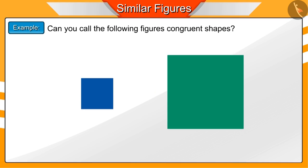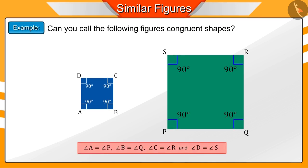If you look carefully, you will find that the side of the smaller square is half the side of the larger square. Now, if we look at the angles of these squares, we will find that their corresponding angles are equal.